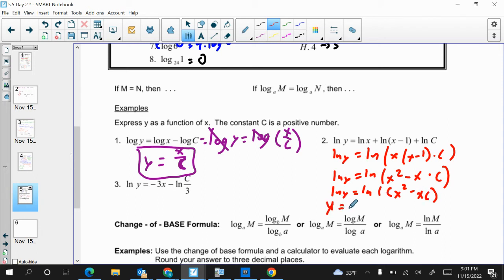So little Allen this one. So, y equals c times x squared minus xc.